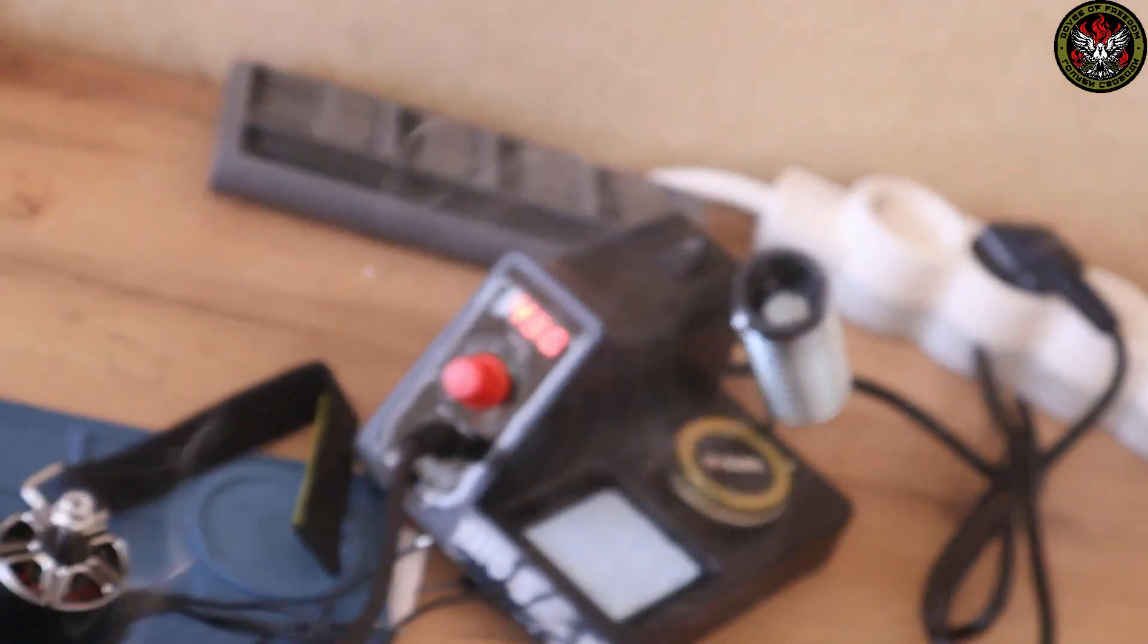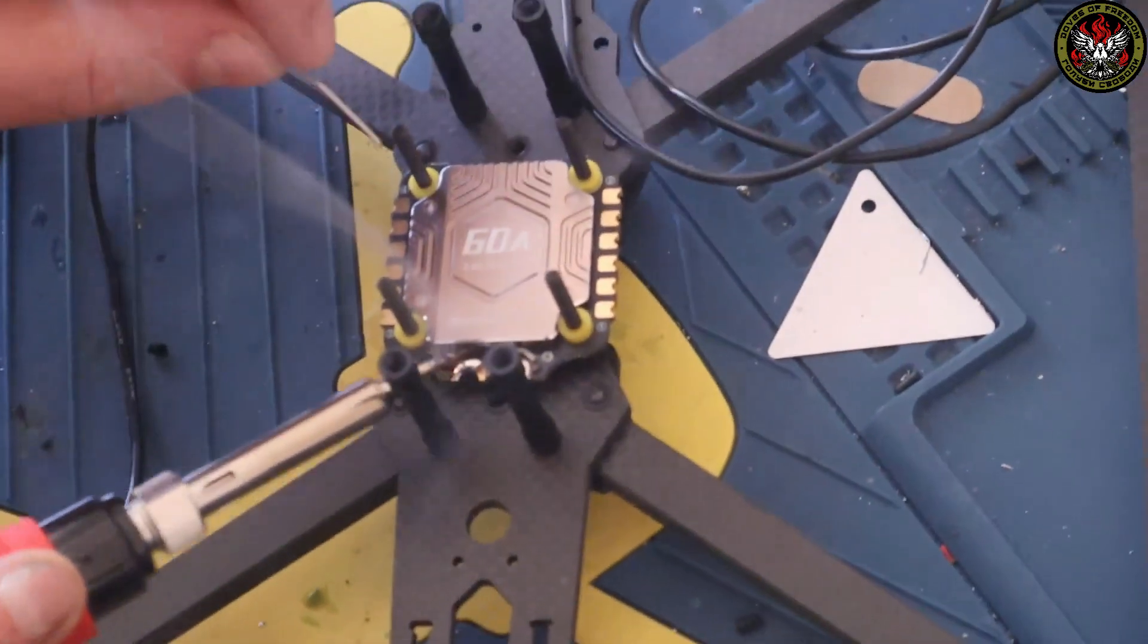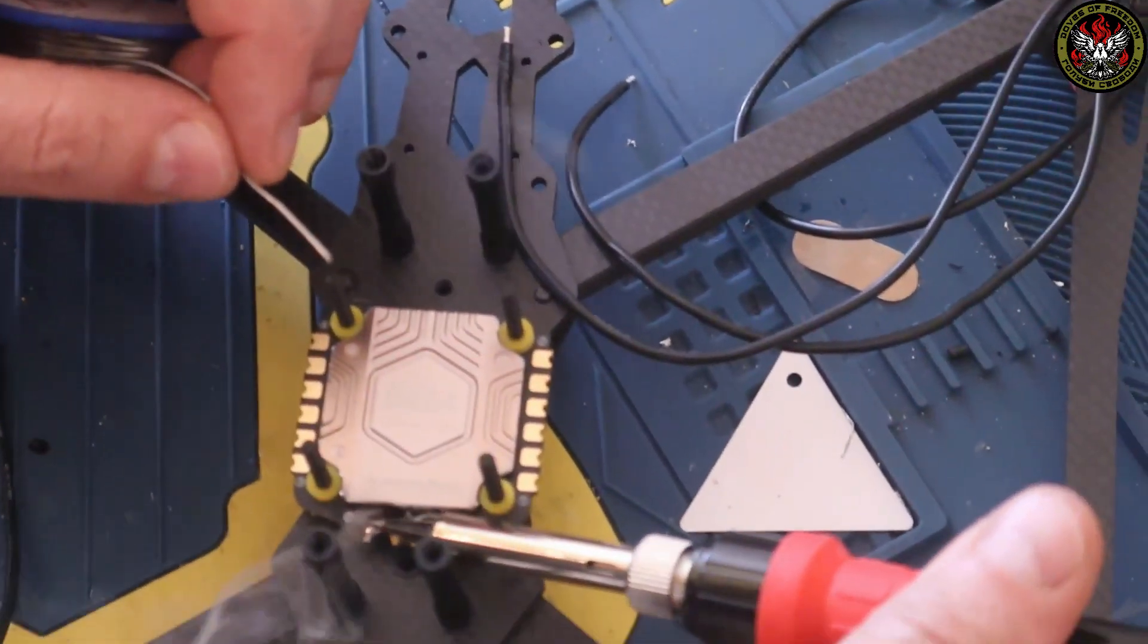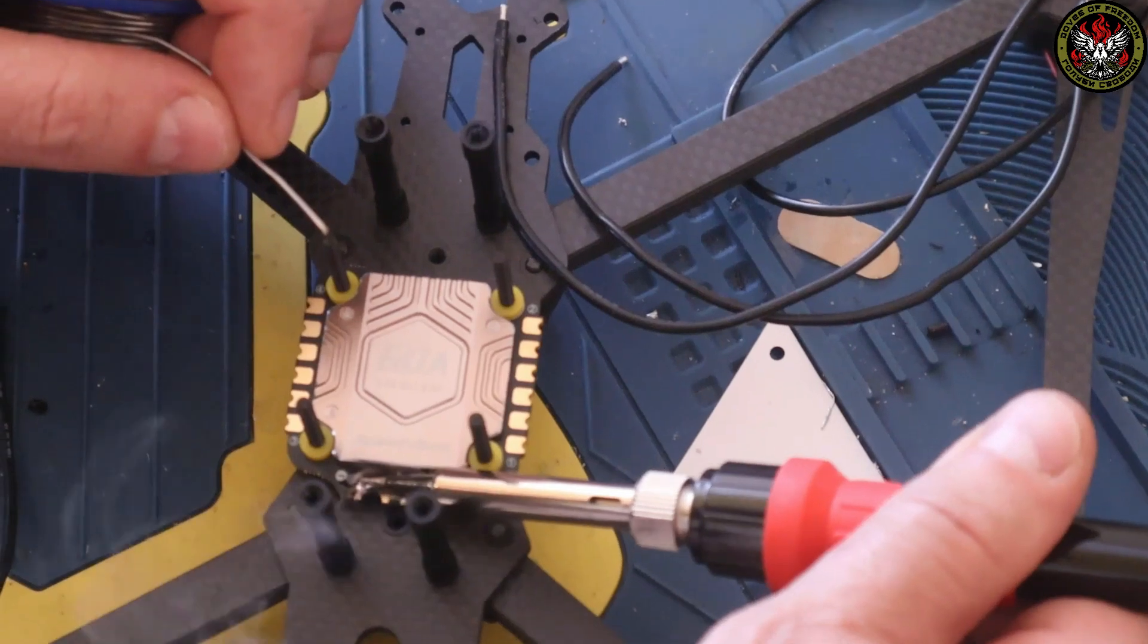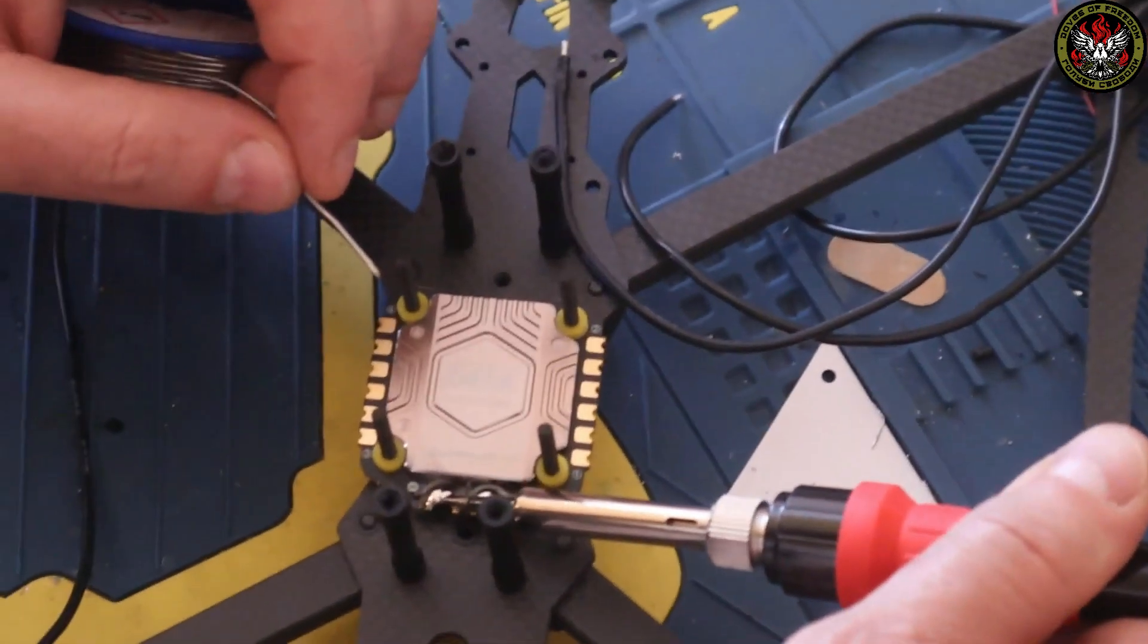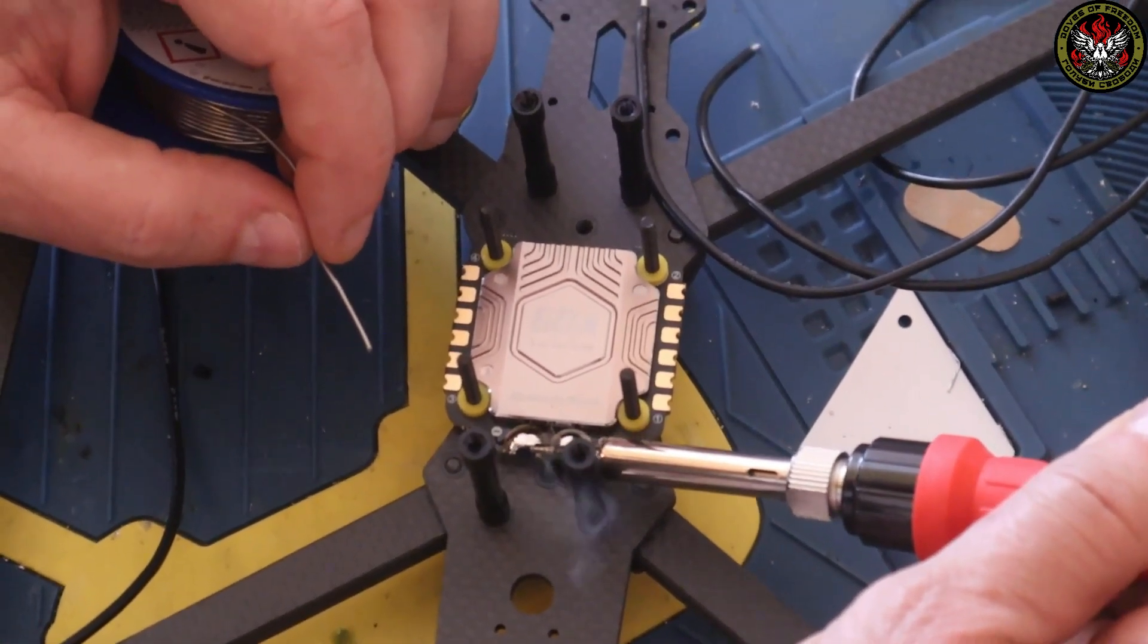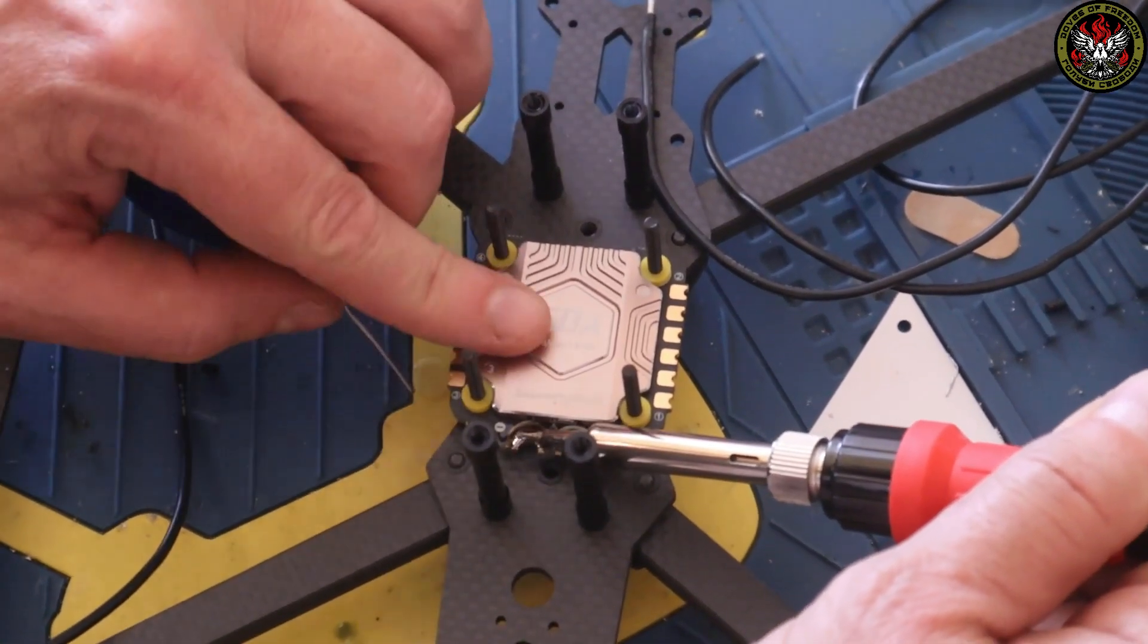So this one's going to be like, this one is at 480, so this is at max temperature. So then I just have to kind of hold this on there until it really heats up the whole pad. And because this ground is connected to so many parts of the ESC, it's really pulling the heat away.